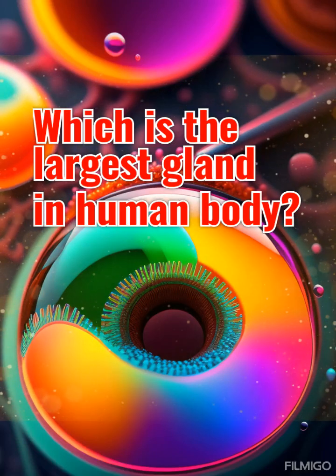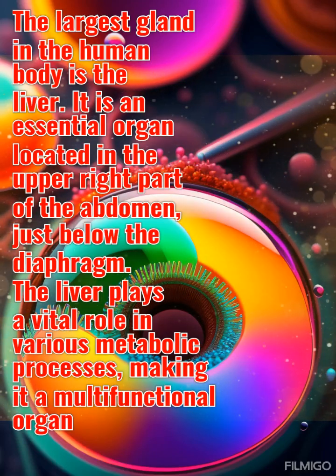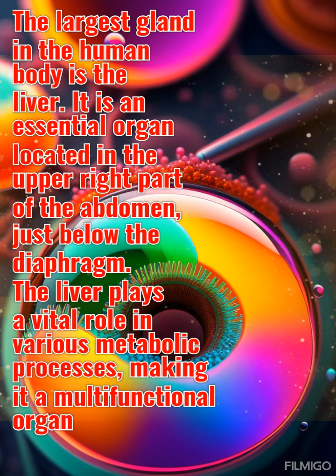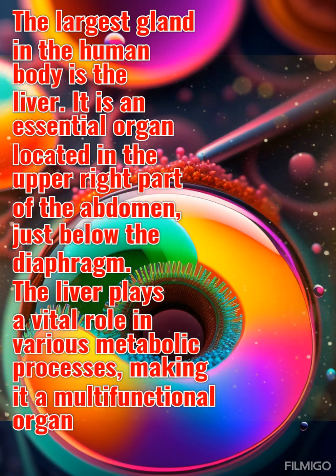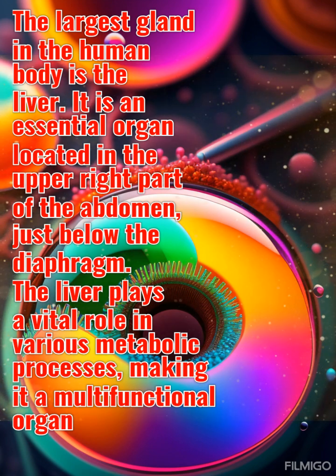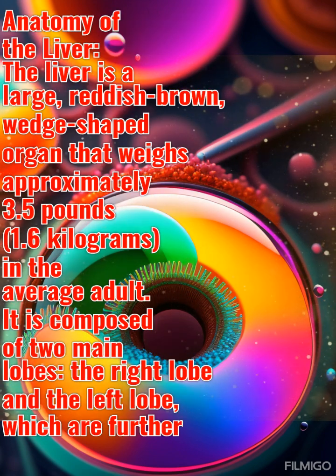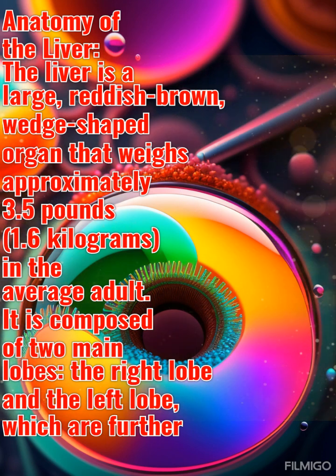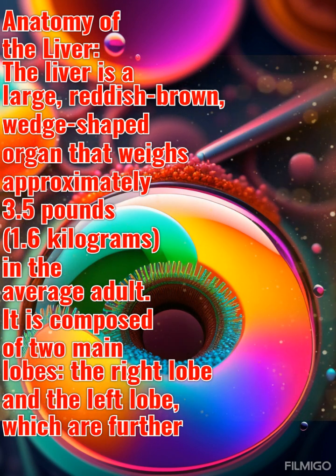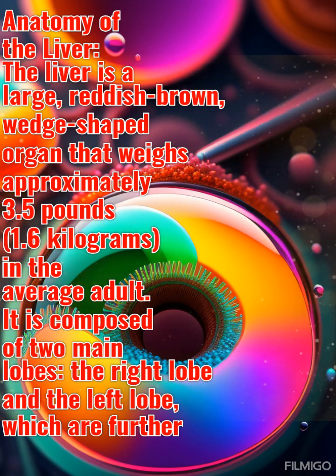Which is the largest gland in the human body? The largest gland in the human body is the liver. It is an essential organ located in the upper right part of the abdomen, just below the diaphragm. The liver plays a vital role in various metabolic processes, making it a multifunctional organ crucial for maintaining overall health and homeostasis.